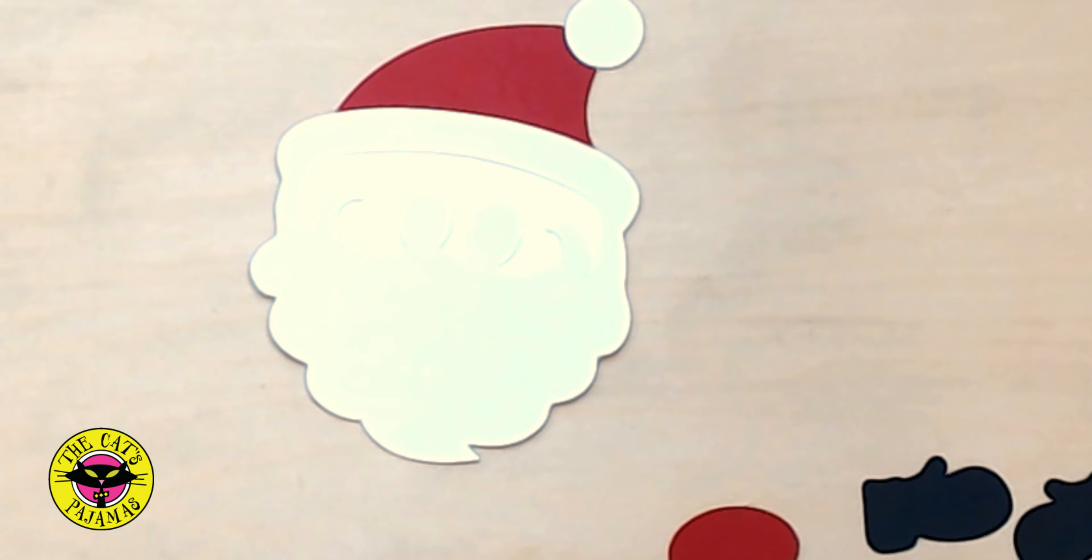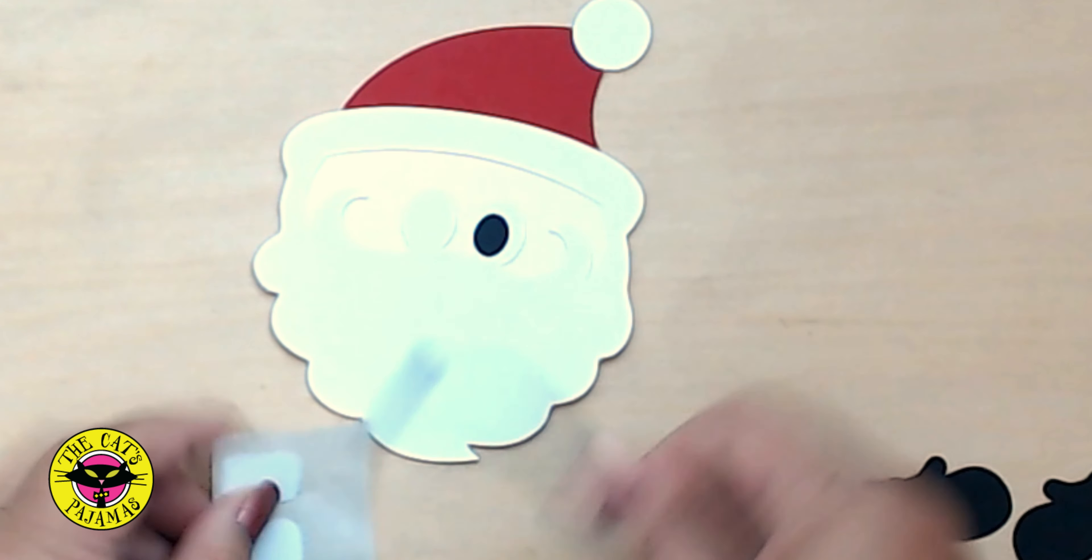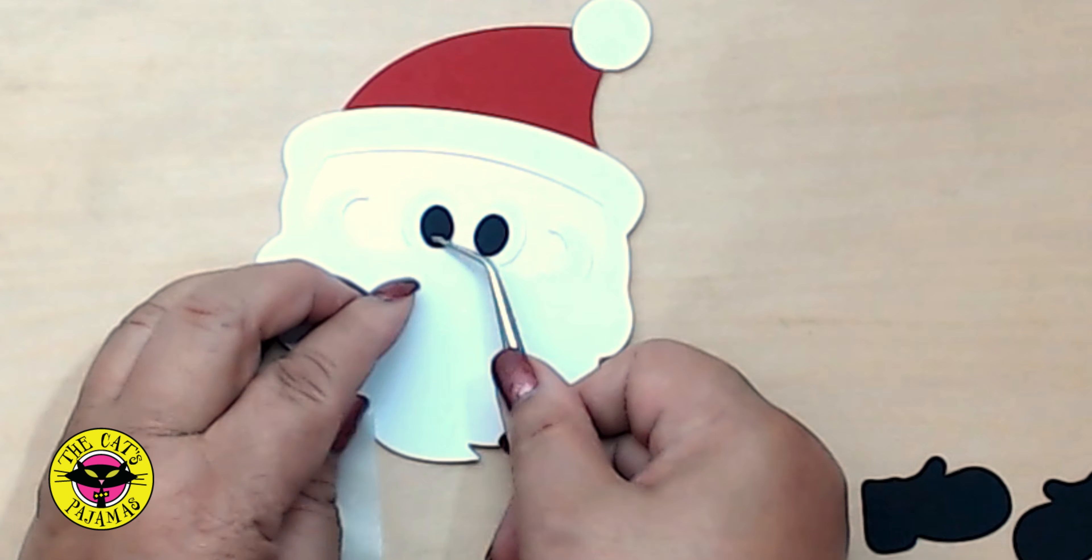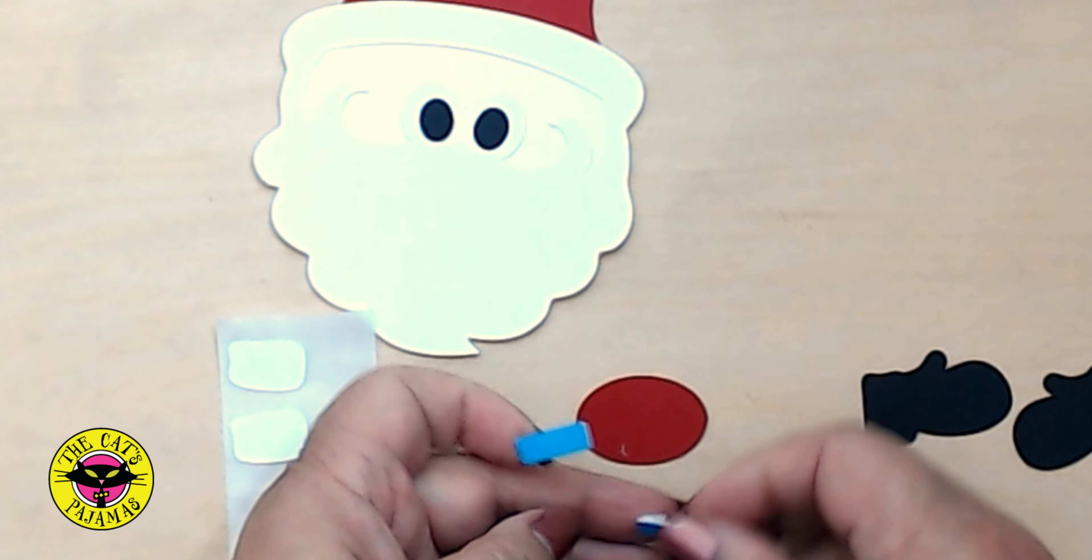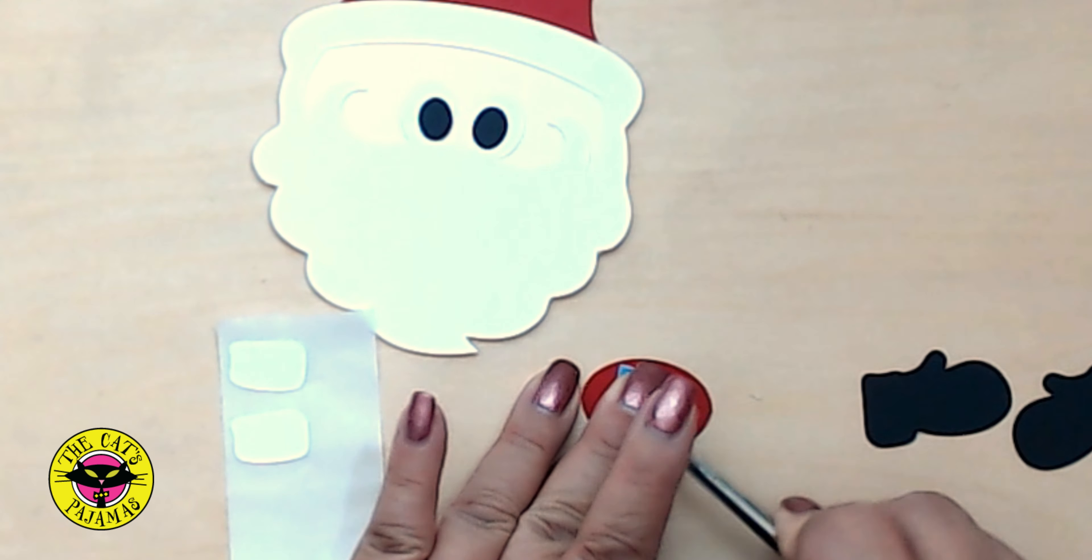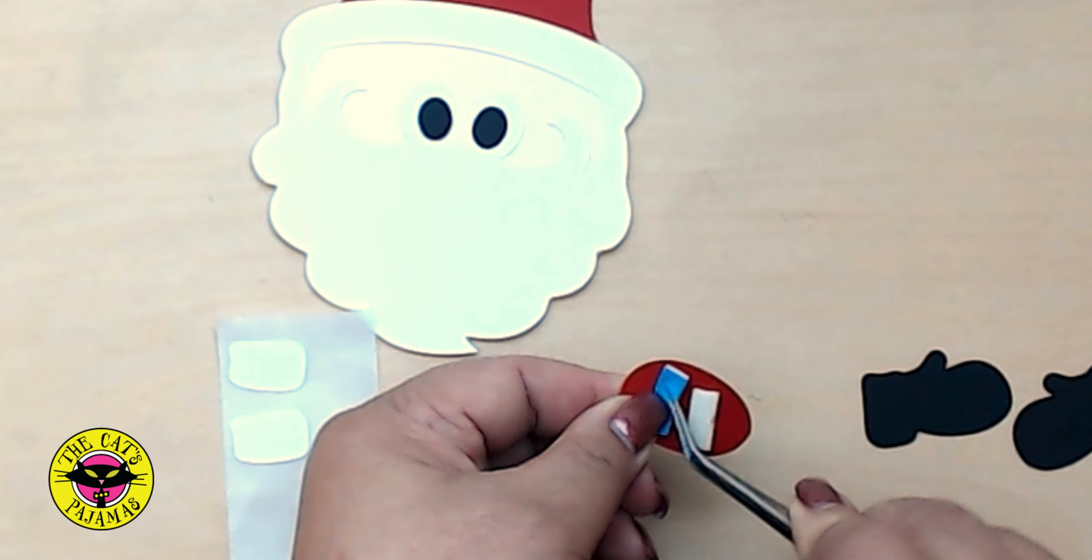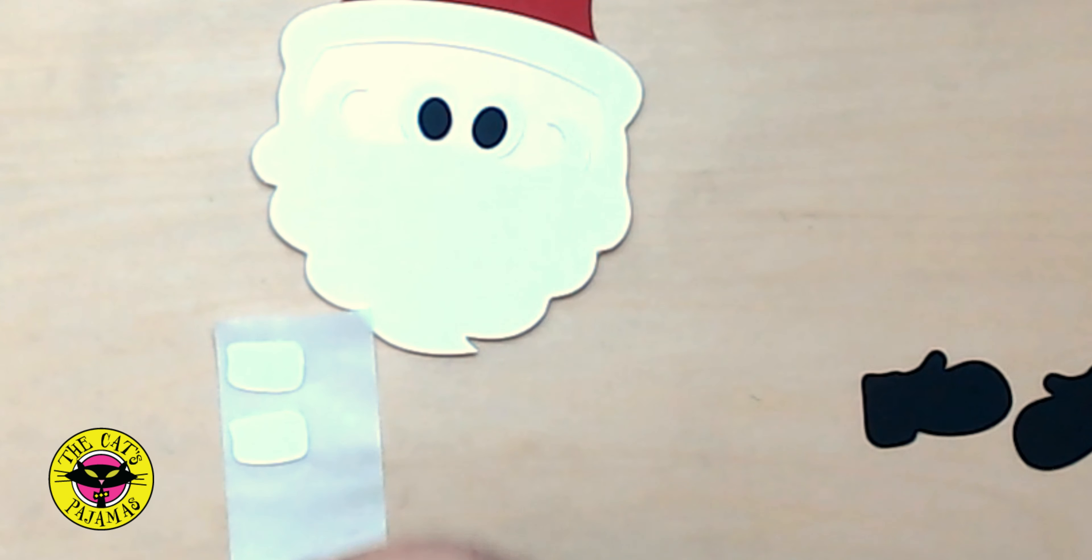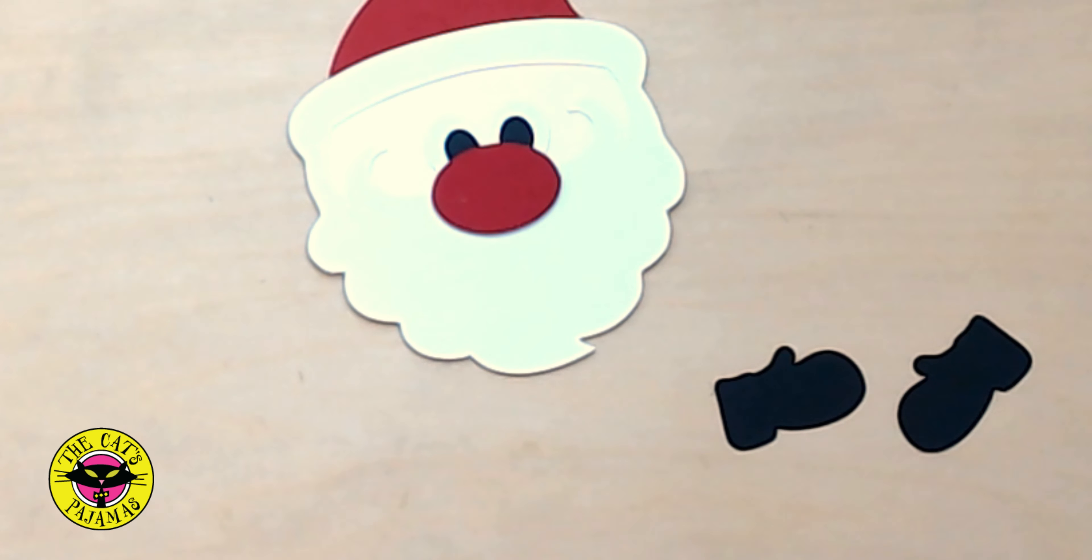Now for the eyes, I'm placing them with tweezers because it's easier to place smaller items precisely where I want them without my big old hands getting in the way. Place them right on the whites that are part of the beard. Now I'll add foam tape to the nose just to give him a little bit more character. Lastly, I'll trim off the mittens.